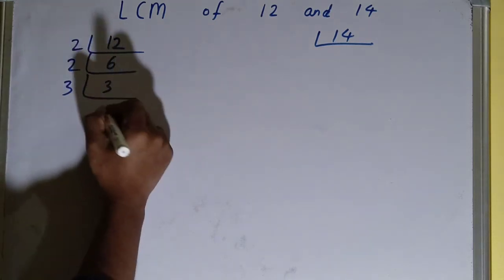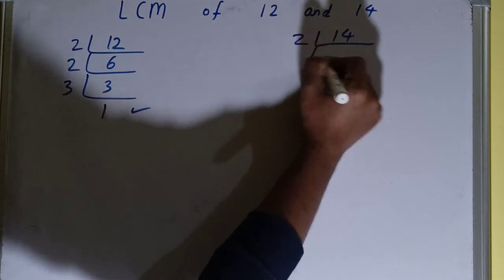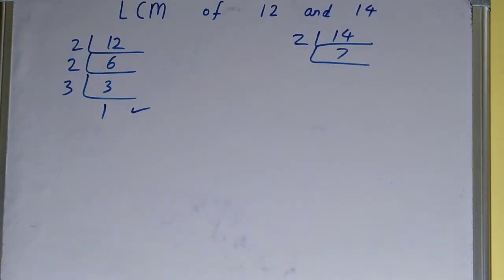You will be getting 1. Once you get 1, you need to stop. Now let's see the other number, which is 14. The same process should follow. Is 14 divisible by 2? Yes it is. Dividing, you will be getting 7. Is 7 divisible by 2? No.